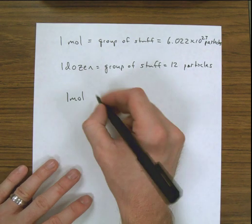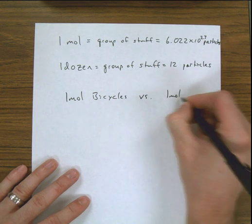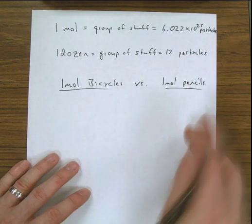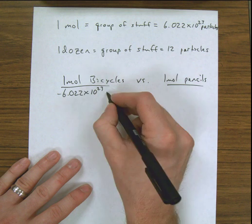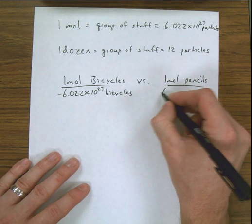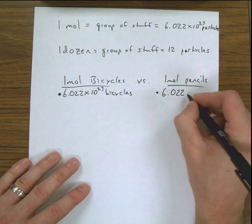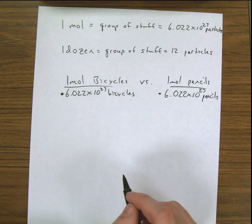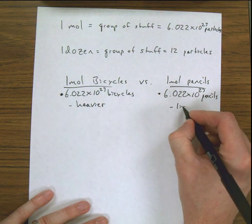Say I have one mole of bicycles versus one mole of pencils. They both are the same amount of stuff because that's what the mole is — they both have 6.022 times 10 to the 23rd of whatever it is we're counting. But if you were going to compare the mass of all these bicycles versus the pencils, the bicycles are obviously going to be heavier and the pencils lighter.